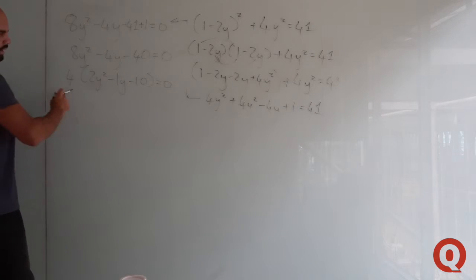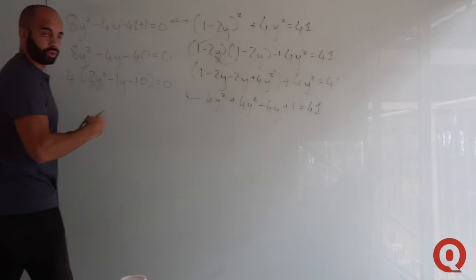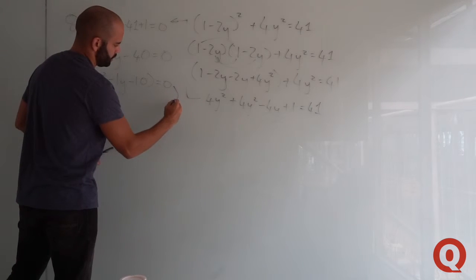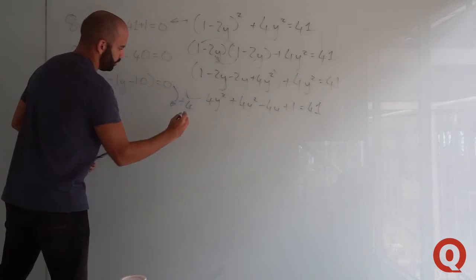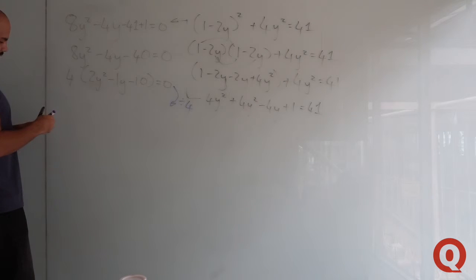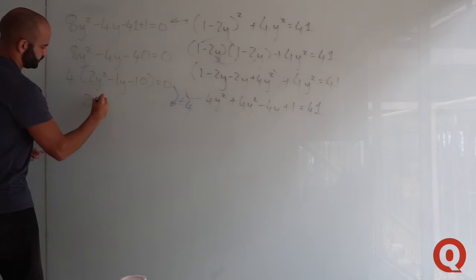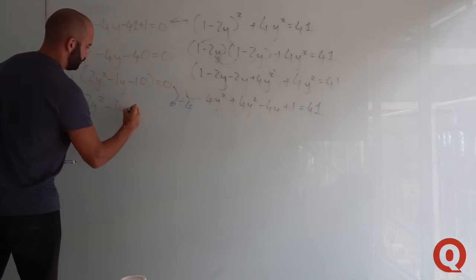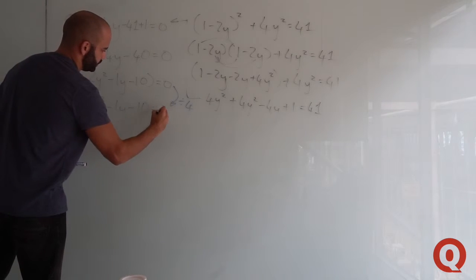Dividing through by 4, you'd have 2y squared minus y minus 10 equals 0.